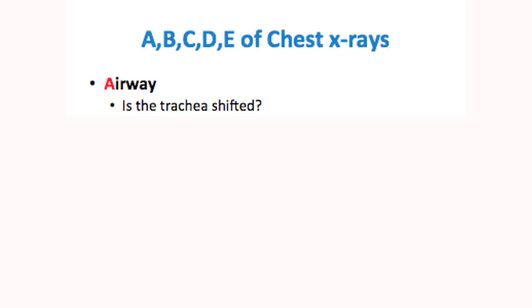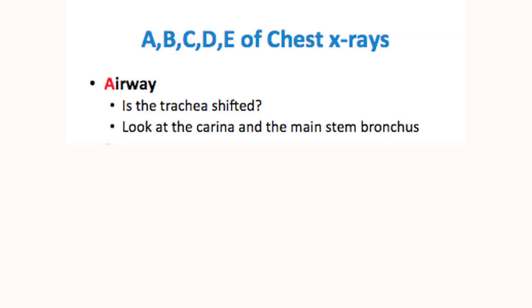Now we're going into the ABCDEs of chest x-ray interpretation. A stands for airway. Number one: look at that trachea — is it shifted? The trachea can shift if you have atelectasis in the upper lobe, a pneumothorax in the upper lobe, or a large pleural effusion pushing the trachea one way or another. Always look at the trachea and follow it down to the carina. Especially if a patient has an endotracheal tube, make sure it's around two to five centimeters above the carina. And while you're there, take a look to see if you can define the right and left main stem bronchus.